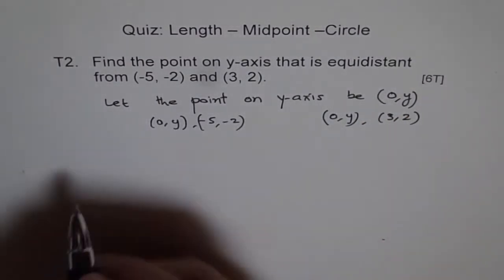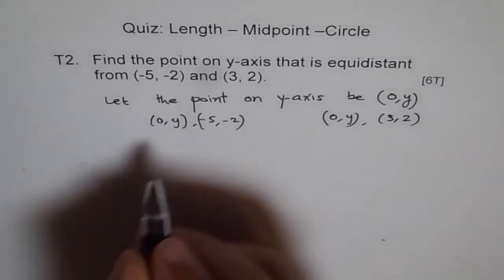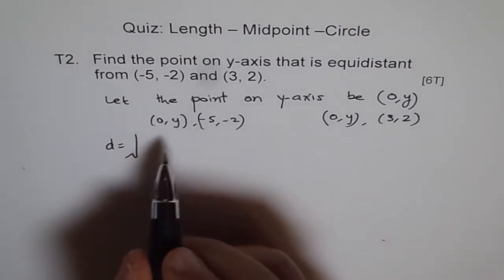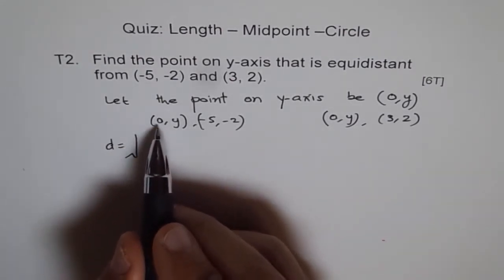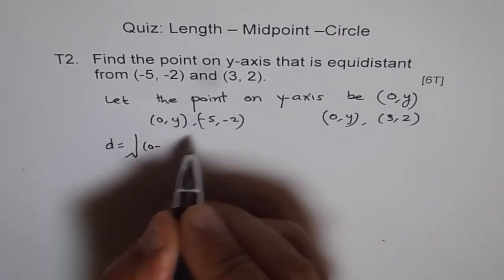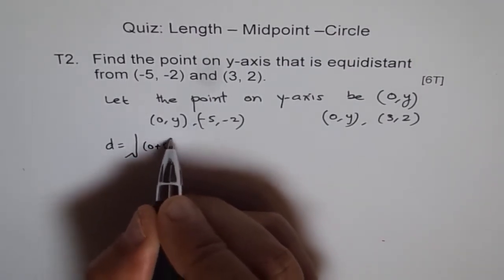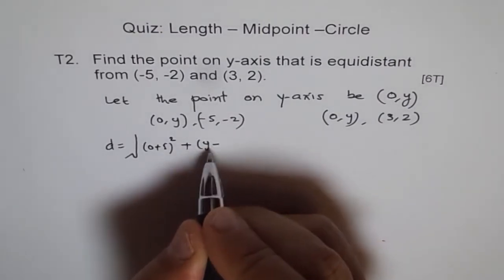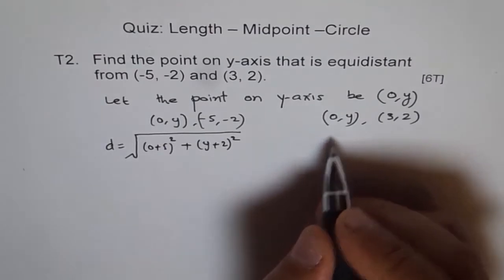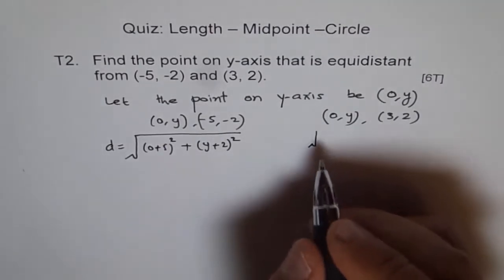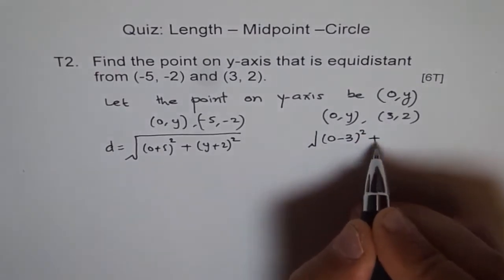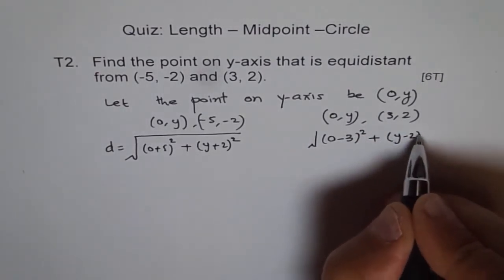So distance formula, we'll apply the distance. This distance is square root of (0 minus -5)² plus (y minus -2)², which is (0 + 5)² plus (y + 2)². And here the distance will be (0 - 3)² plus (y - 2)².